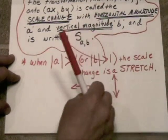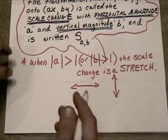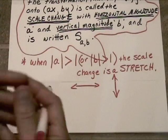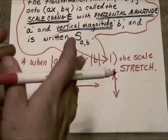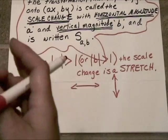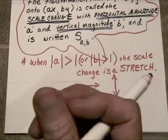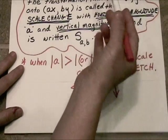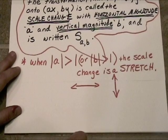You can be making it wider and making it taller. So you can distort figures with scale changes as opposed to size changes where both the horizontal and the vertical motions are exactly the same. You create similar figures with size changes, but scale changes, you can transform figures and morph them.